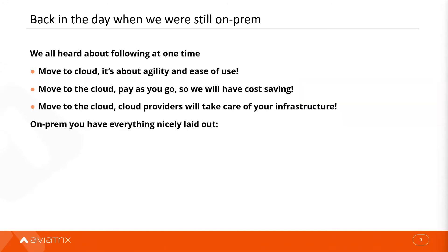Today we're going to be talking about a scenario where one of our customers is facing a challenge and we have been able to provide a solution. When we go into the cloud, we're always told that the cloud is all about agility and easy to use. And apparently no one's going to tell you that once you move to cloud, you have to re-IP your entire environment because you have an IP conflict and you don't want to do that. One of our customers ran into this overlapping IP situation, so we provided solutions. This could also be used for other types of shared service models as well.